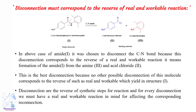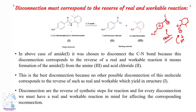For the amine example, the synthon has a positive charge (nitrile or electrophilic fragment) and a negative charge (amine or nucleophilic fragment). In the above case of amine, we choose disconnection at the C–N bond because of the polarity of the bond and the reverse of a real and workable reaction. The best disconnection yields amine and chloride, because no other possible disconnection corresponds to such a real and workable reaction. Every disconnection must have a real and workable reaction in mind for the corresponding reconnection.